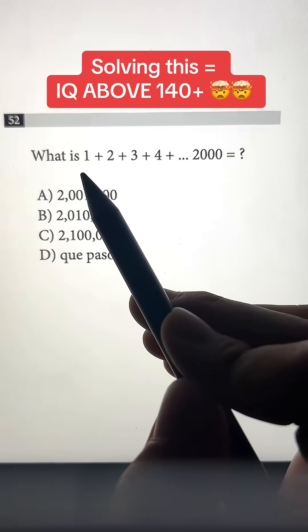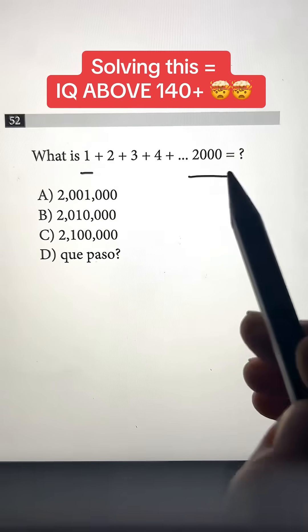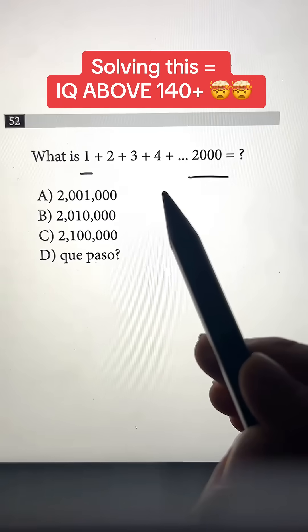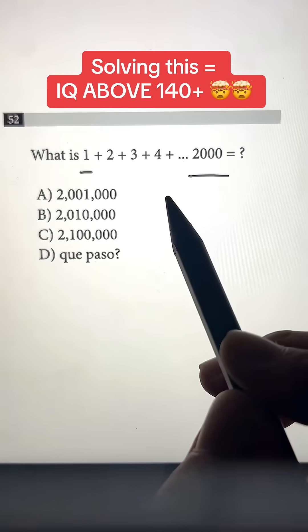Now the question is asking us to add up every single number from 1 all the way to 2,000, which we are not going to do. That is going to take way too long. Instead, we're going to look for a pattern.